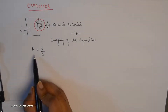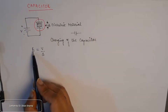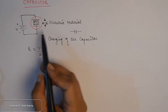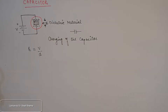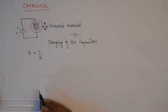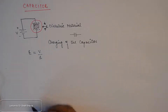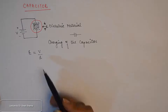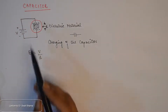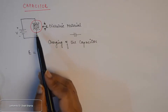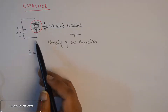The electric field is directly proportional to the applied voltage and inversely proportional to the distance between the parallel plates — so more distance means a lesser resultant electric field and vice versa. This whole process can be termed as the storage of energy — this is how a capacitor stores energy in the form of an electric field across its plates.